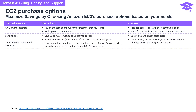On-demand instances are ideal for applications with short-term workloads or those that can't tolerate any disruptions. Now let's talk about savings plans. Save up to 72% compared to on-demand prices by committing to a spend for one or three years. Your usage up to the commitment is billed at a reduced rate, while exceeding usage is at standard on-demand rates — perfect for committed and steady-state usage.